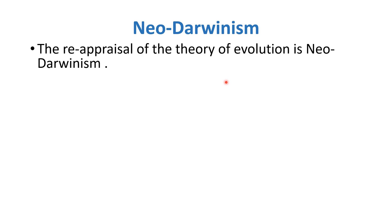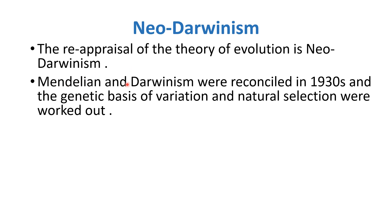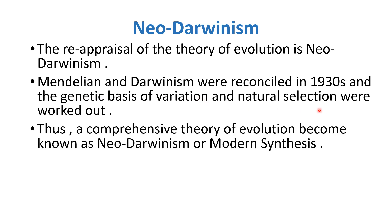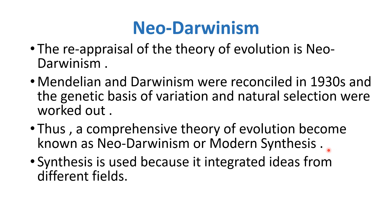Now we are going to study Neo-Darwinism. Neo-Darwinism is basically the reappraisal of the theory of evolution. It was a combination of Darwin and Mendel in the 1930s, and it provided the genetic basis of variation and natural selection. Thus, the comprehensive theory of evolution became known as Neo-Darwinism and Modern Synthesis — called Synthesis because it integrated different fields together.